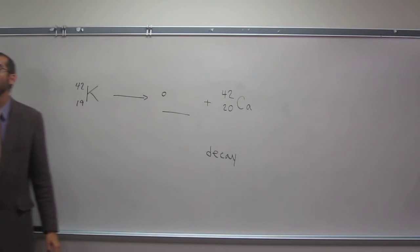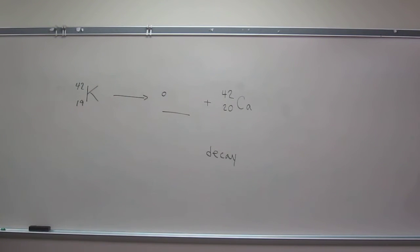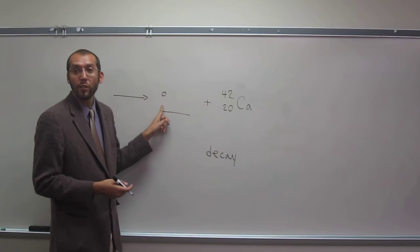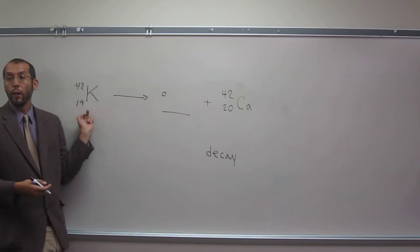So from the ones we know, it can either be a beta particle or a positron, so a high-energy electron or a positron. But if we look at 20 here, if this was to be a positron, this should be 21, and it's not.